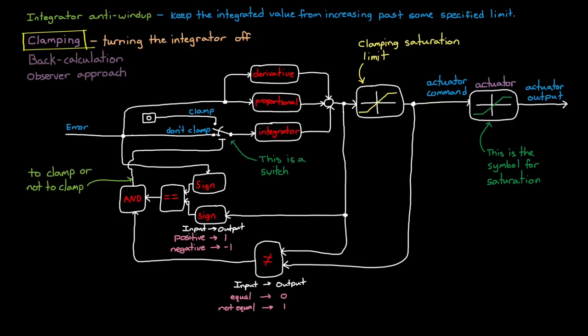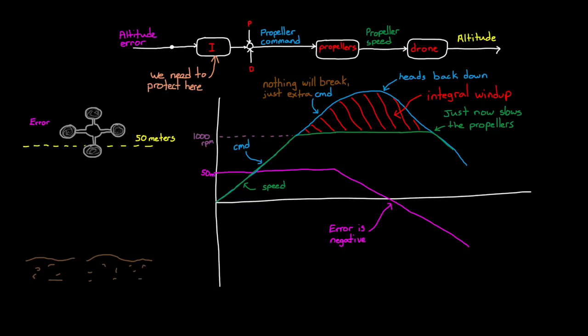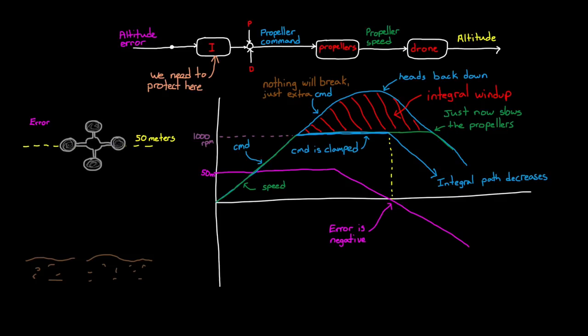This is also referred to as conditional integration because our controller will shut down the integrator if it meets certain conditions. One, the output is saturating, and two, the error is the same sign of the controller output. If we had an anti-windup method on the drone that we were holding in saturation, then as soon as the drone got to the commanded altitude, the error would switch signs and the integral path would immediately start to decrease the propeller speed, limiting the overshoot. And that's pretty awesome.